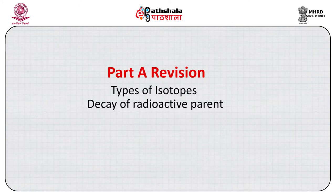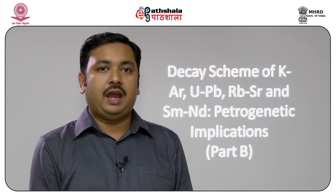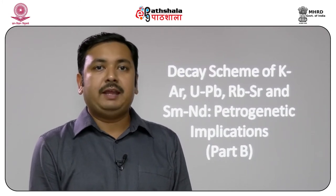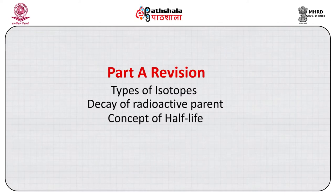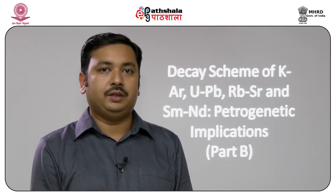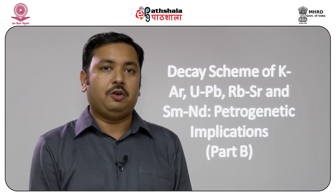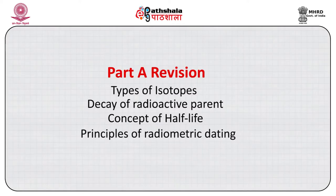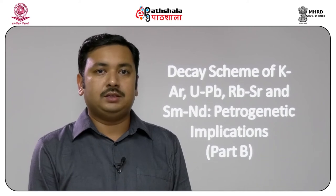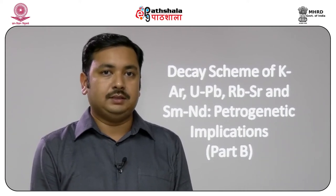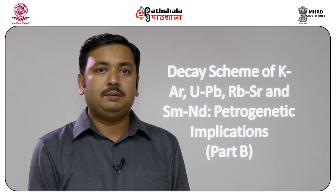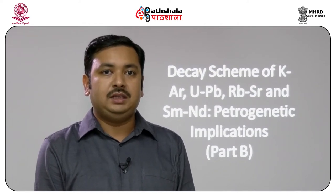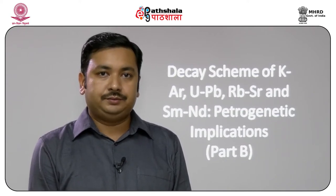I discussed the decay of radioactive parent to stable daughter, which depends on the number of parent radioactive atoms present at any time. Then I moved on to the concept of half-life — the time after which one half of the radioactive isotopes decays to form daughter isotopes. After that I derived the basic equation required for radioactive dating and used it to derive specific equations for potassium-argon, rubidium-strontium, uranium-lead, and samarium-neodymium systems, and how the age t of rocks and minerals can be derived.